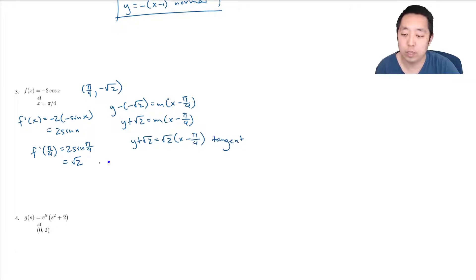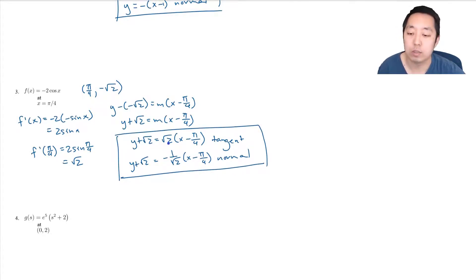And the normal line just has a negative reciprocal, so the slope is negative 1 over root 2 times (x minus pi over 4). You could rationalize the denominator of this slope if you really needed to. Otherwise, that's fine. Thanks for watching. If you're looking for more examples, go to my website where I have free access to over 400 calculus questions that I solve and show you step by step.